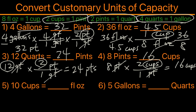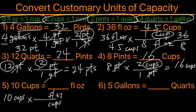For the fifth example we have 10 cups and we want to convert to ounces, using this conversion. We write 10 cups with cups on the bottom and ounces on top: one cup equals 8 ounces. We cross out the cups and are left with ounces. Ten times 8 is 80, so we have 80 ounces.